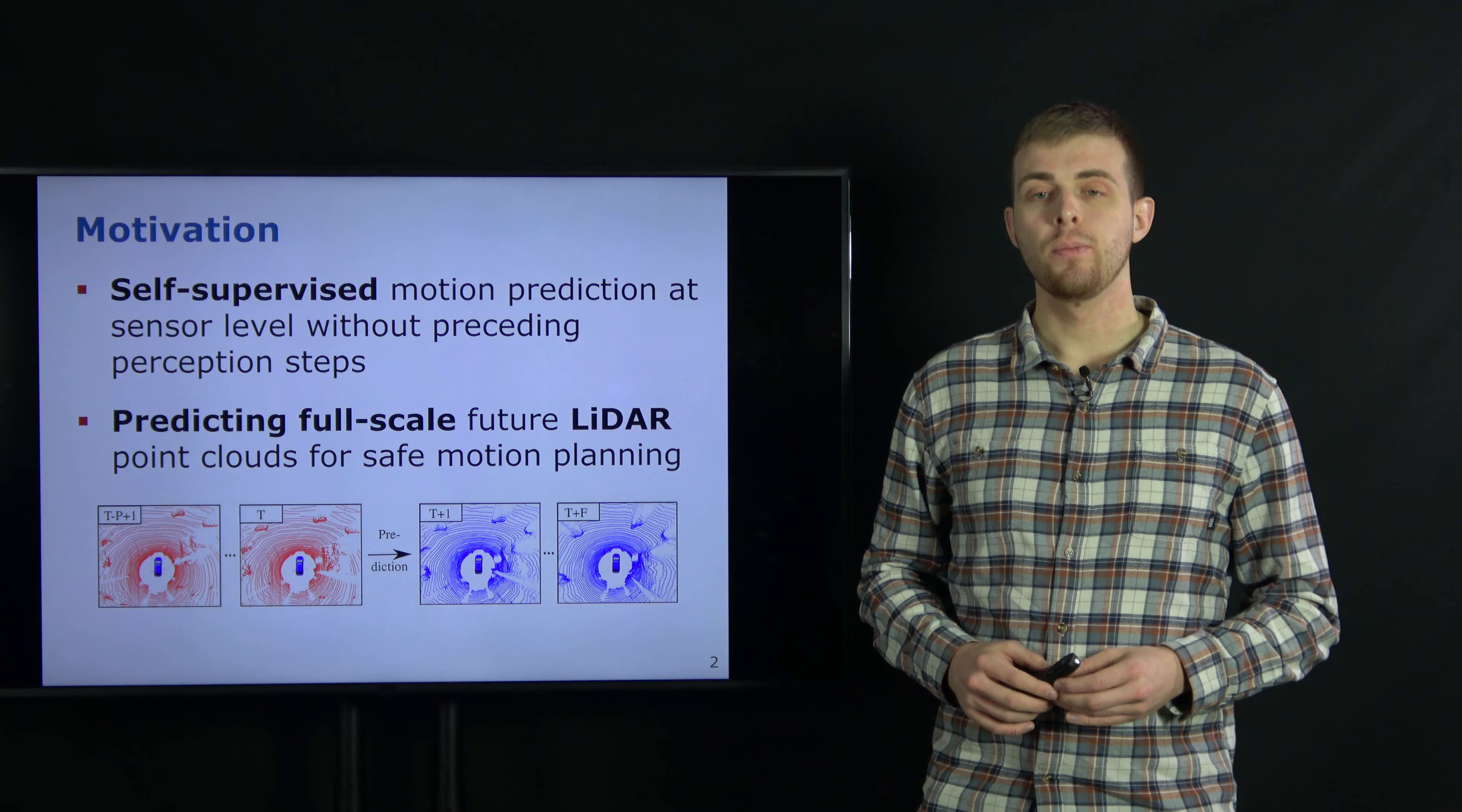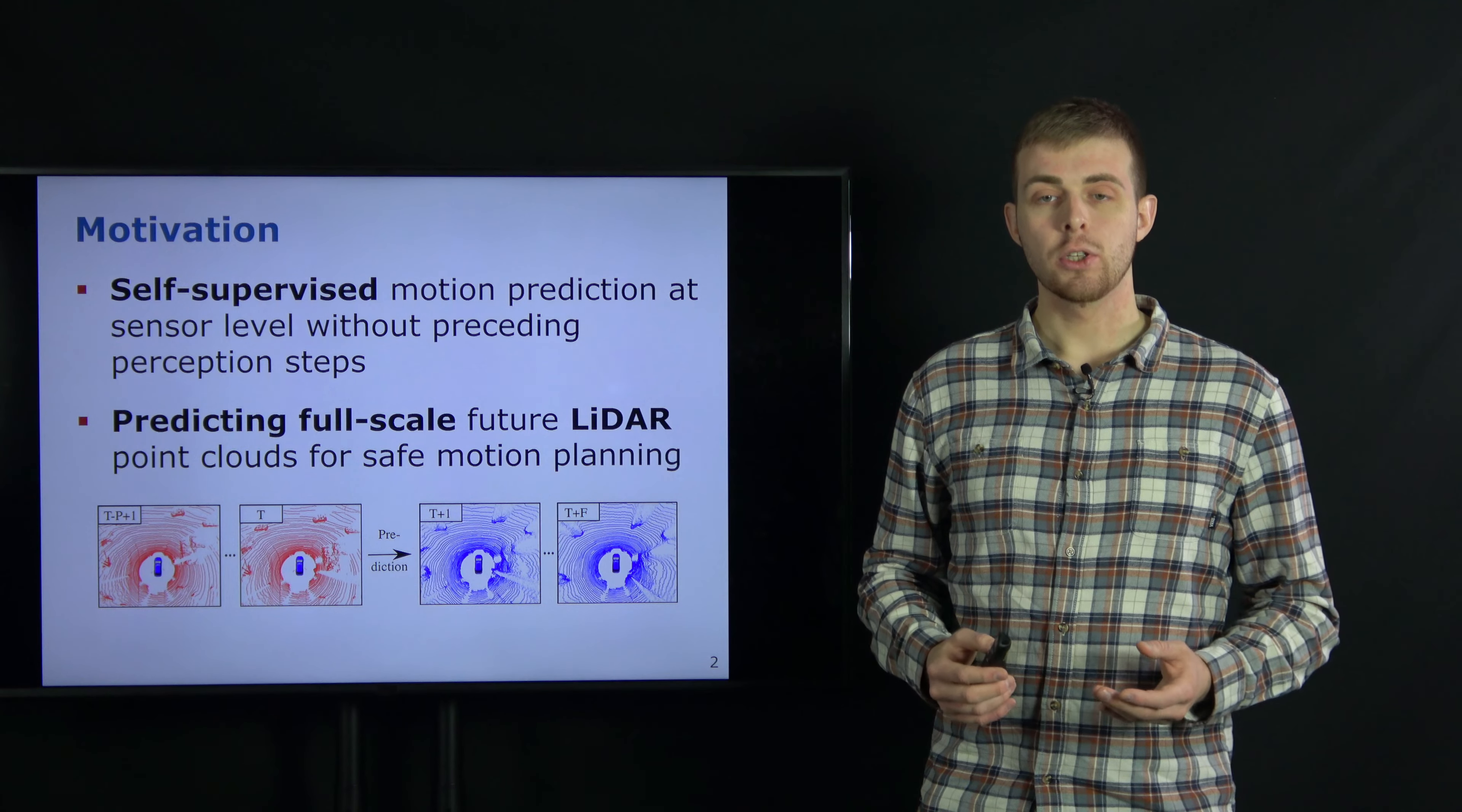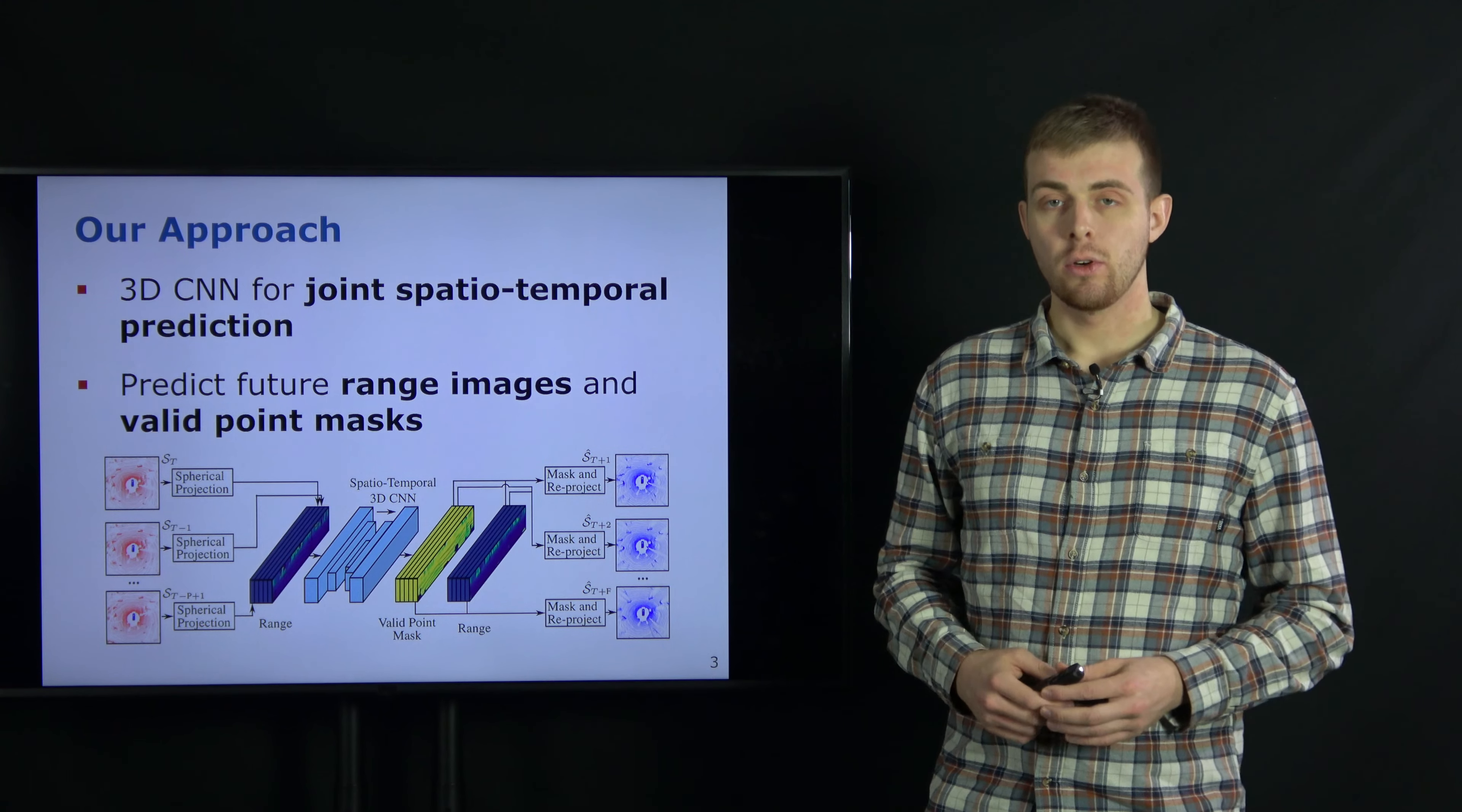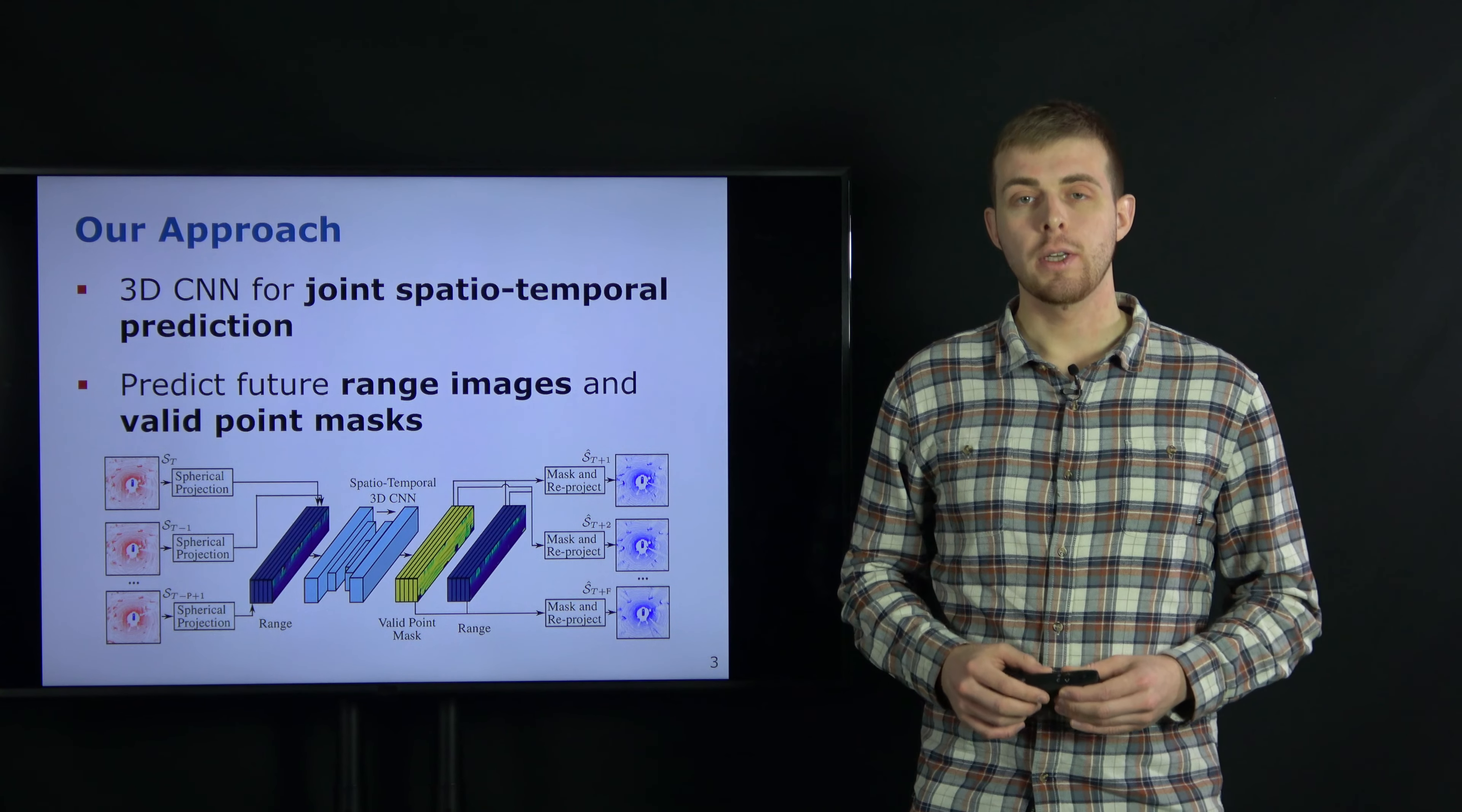The task is illustrated in the figure below. Given a sequence of P past point clouds, we want to predict the next F future point clouds. This approach does not rely on a perception system that can produce misperceptions if the object has never been seen during training. Our method does not require any labels, map, or past pose information and can therefore be trained self-supervised. This allows to evaluate and fine-tune the prediction method online when running in unknown real-world environments.